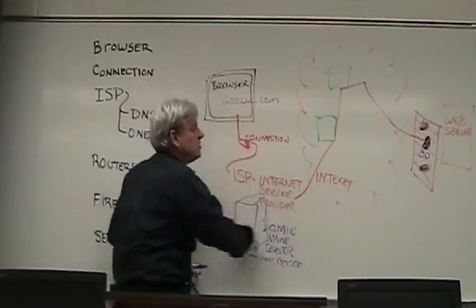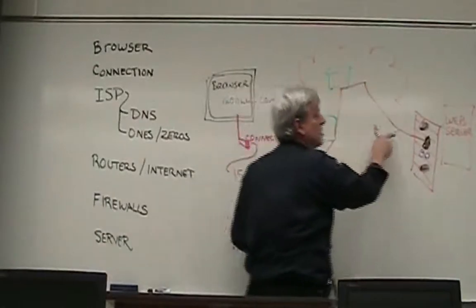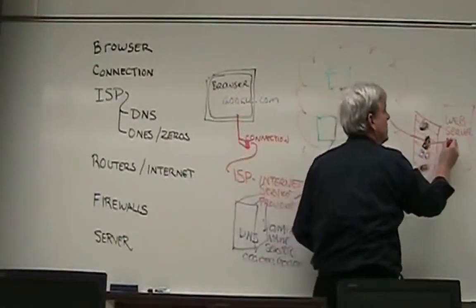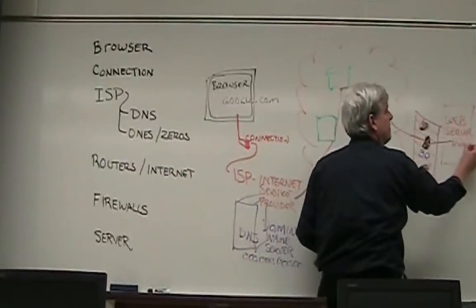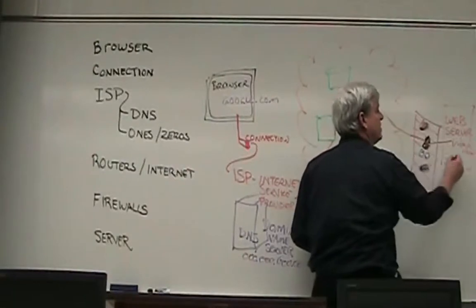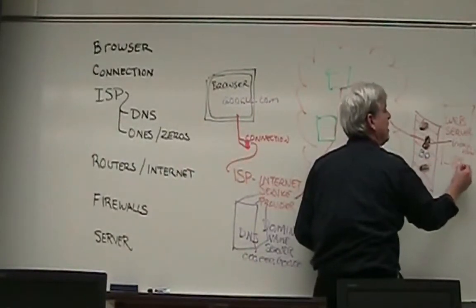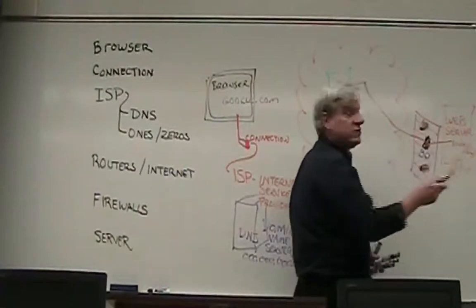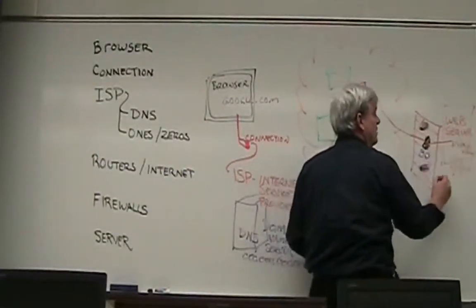So that request is sent through this whole pattern, it could go any which way in the internet, goes through the firewall, comes to our server, and the server says, oh, yes, I have index.html. I also have a couple of JPEGs or GIFs that I'm going to send along, because they're part of this page. So it's going to take these files, and it's going to pack them all up into packets.